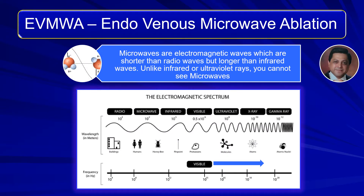So what exactly are these microwaves? Microwaves are electromagnetic waves which are shorter than radio waves but longer than infrared waves. Unlike infrared or ultraviolet rays, you cannot actually see the microwave.